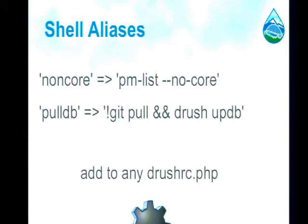Here are two examples. I have a command 'drush non-core', which maps to pm-list --no-core. Another one, 'pull-db', executes two different commands: first a git pull, and then drush updb, which updates the database. So it gets my new code and runs all my pending updates.